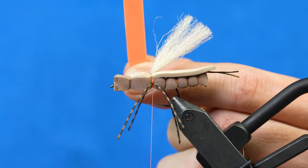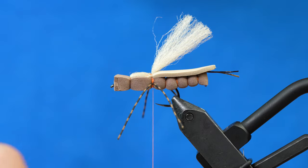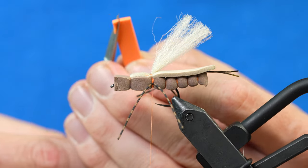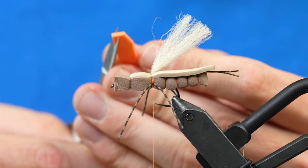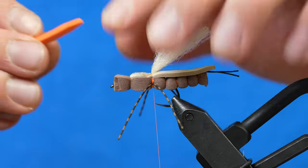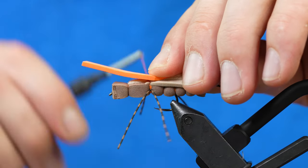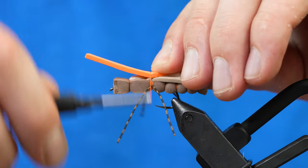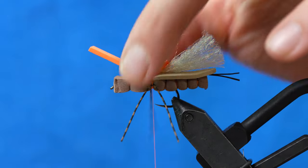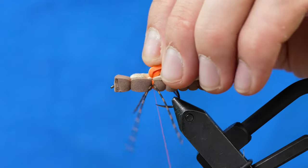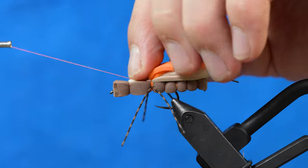Then I've got some indicator foam, just a two mil orange. I like to trim those guys at an angle. We'll tie that in with two soft wraps, and then we'll pinch and cinch. We'll fold our indicator foam back. We'll jump back forward to the front.